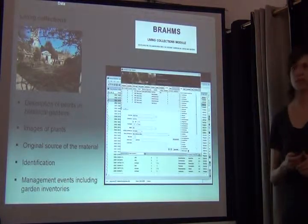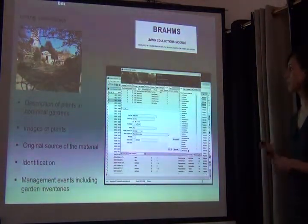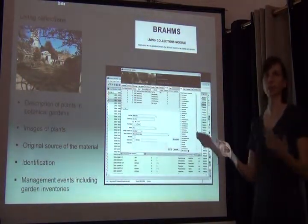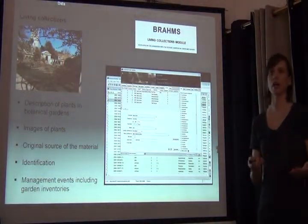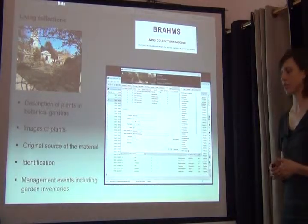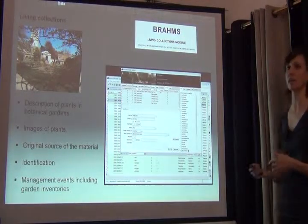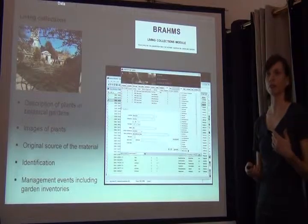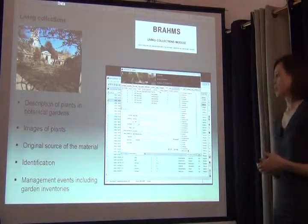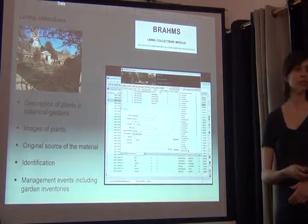For living collections, Brahms provides descriptions of plants in a garden, including images and the original source of the material — for example, if you're planting something from seed received from another country, you can track where those living plant collections originally came from. Identifications and any management events such as trimming a tree or garden inventories and future tasks can all be tracked in the database.